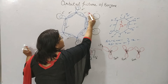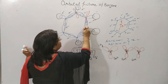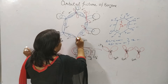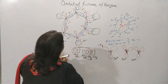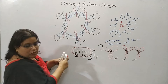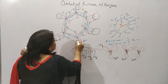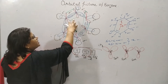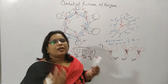Drawing the 2pz orbitals slightly tilted for clarity, these 6 2pz orbitals each having a single electron overlap laterally with the neighboring carbon's 2pz orbital, forming pi bonds. This overlapping can be either clockwise or anti-clockwise.